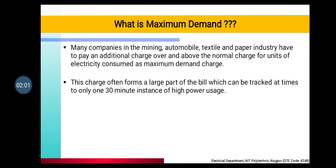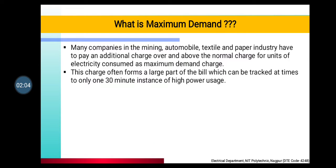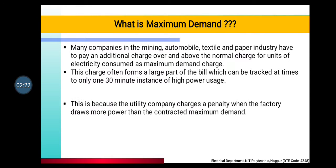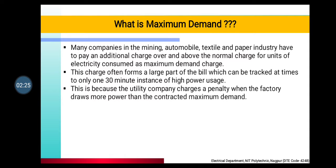A graph is generated where you can see that on a given day and hour, the maximum demand is recorded. Maximum demand is calculated within 30 minutes — it tells you the highest power you have used in that month or that year. And because of this, companies have to pay a penalty to the utility company.